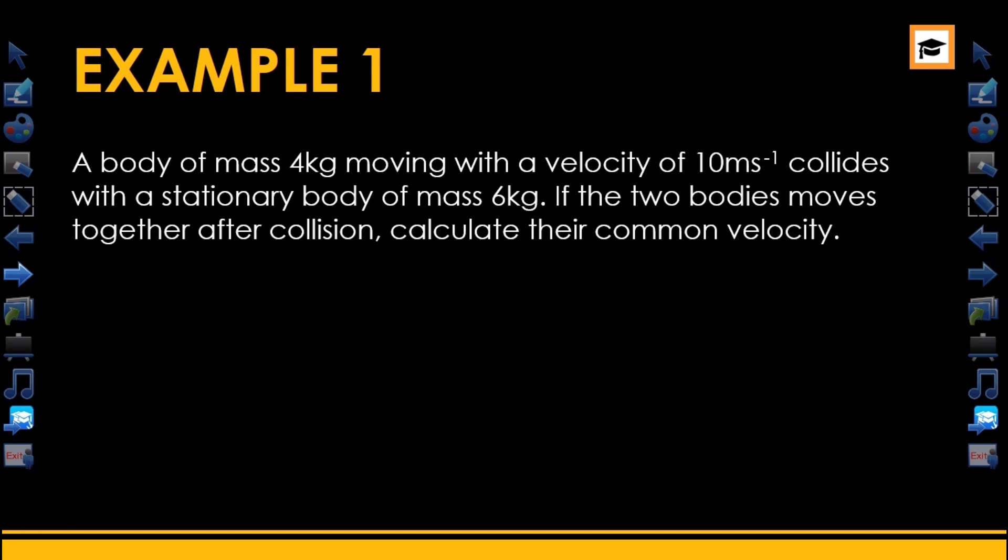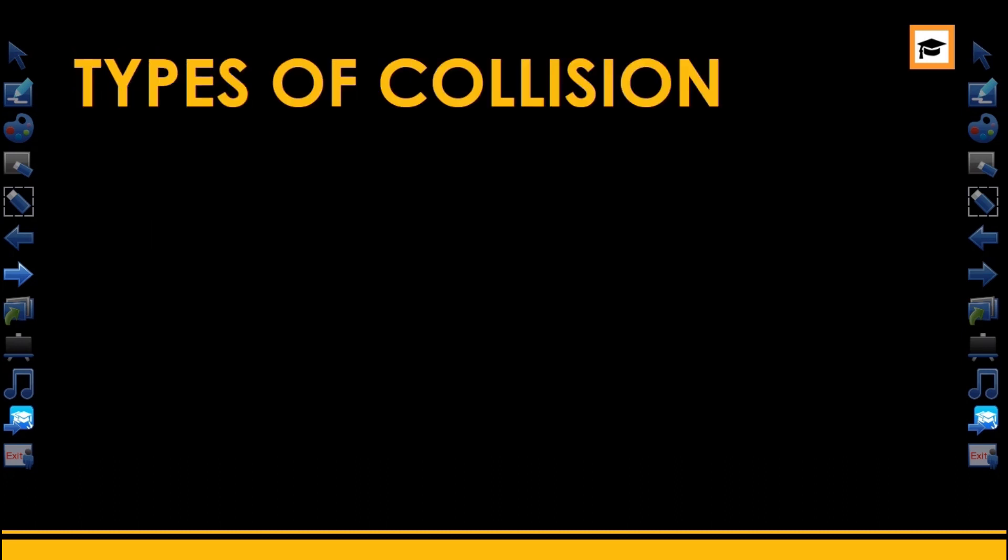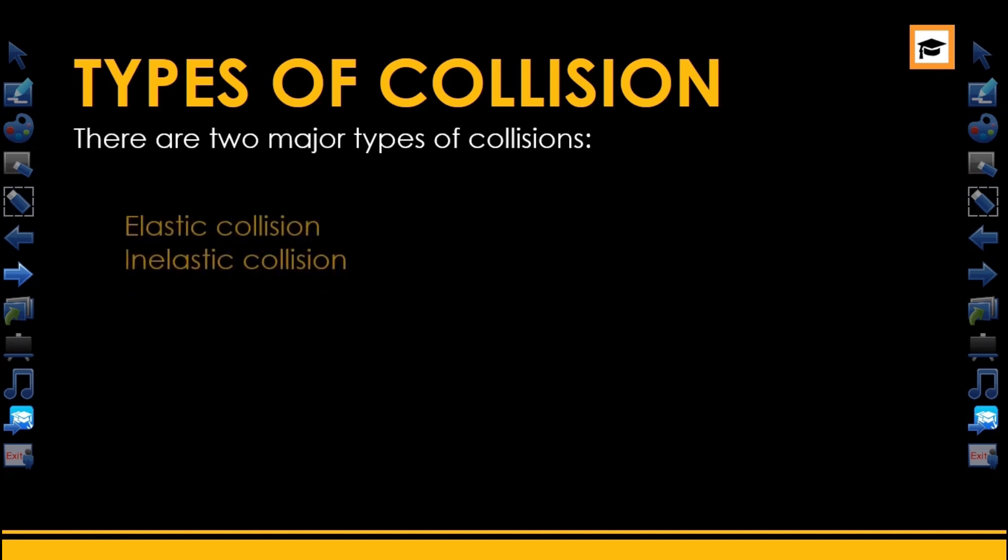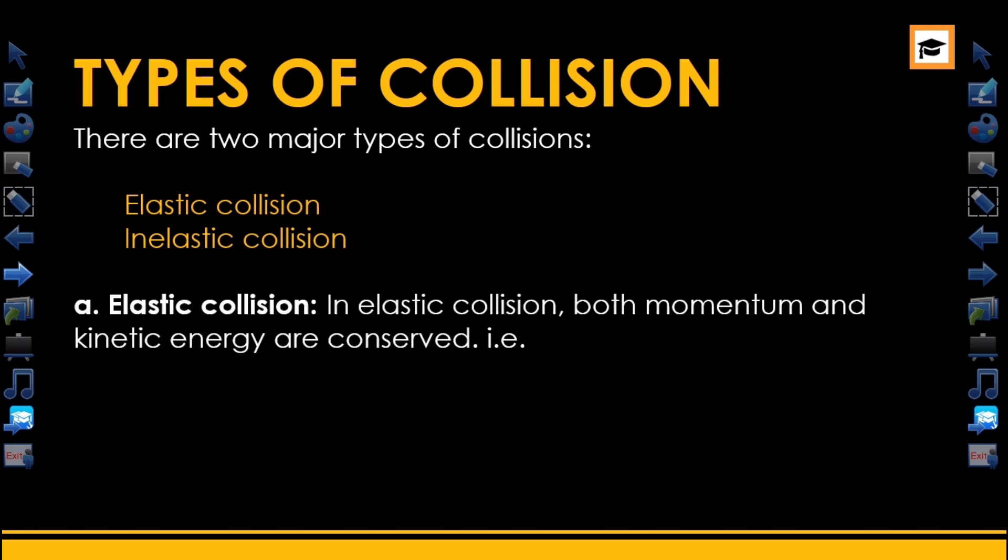Basically there are two major types of collision: elastic collision and inelastic collision. In elastic collision, both momentum and kinetic energy are conserved. M1U1 plus M2U2 equals M1V1 plus M2V2 is the momentum. M1U1²/2 plus M2U2²/2 equals M1V1²/2 plus M2V2²/2 is the kinetic energy that is conserved.